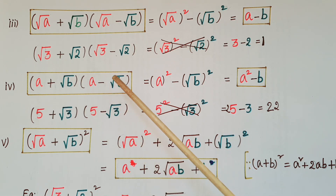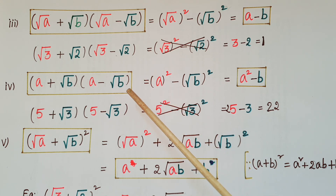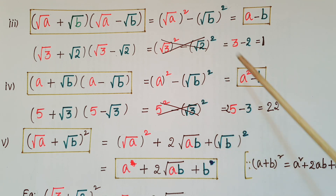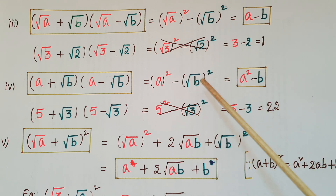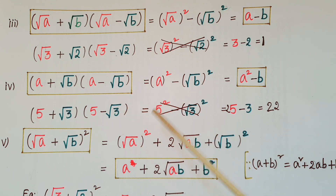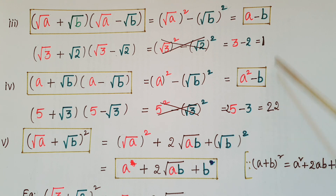The next one: (a + root b)(a − root b) is also in the form of (a + b)(a − b). Here a is a and b is root b, so the result is a² − (root b)² = a² − b. For example, (5 + root 3)(5 − root 3) = 5² − (root 3)² = 25 − 3 = 22. If we don't remember this formula, we can directly write a² − (root b)².